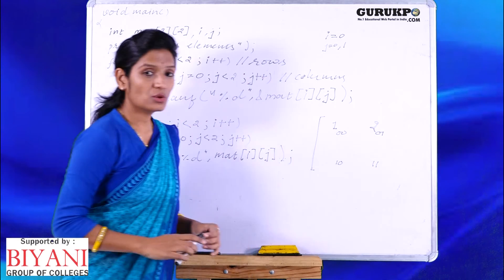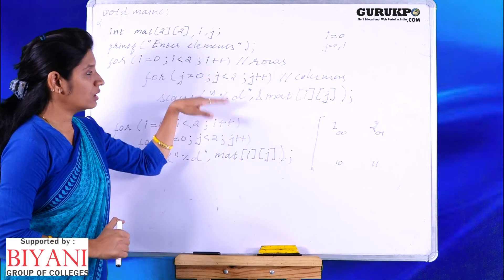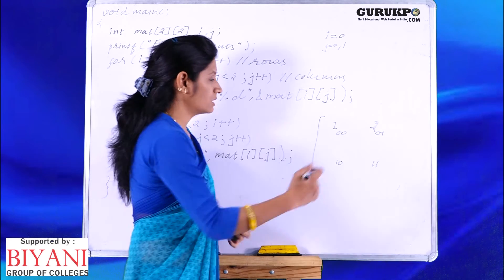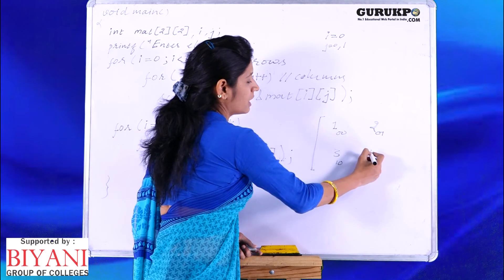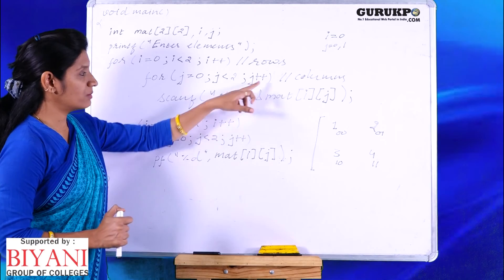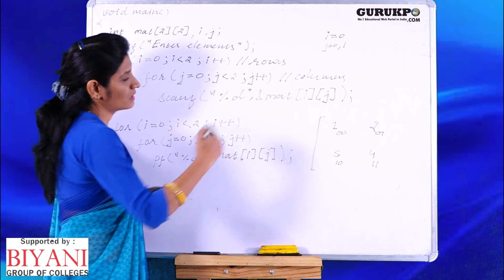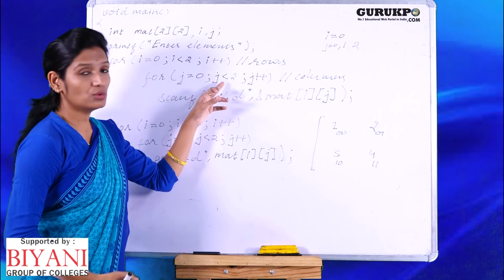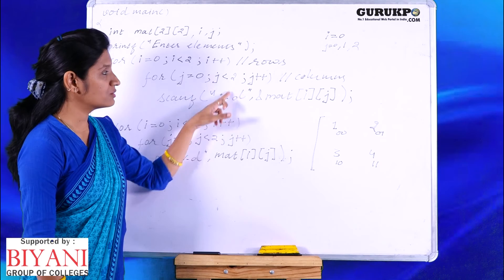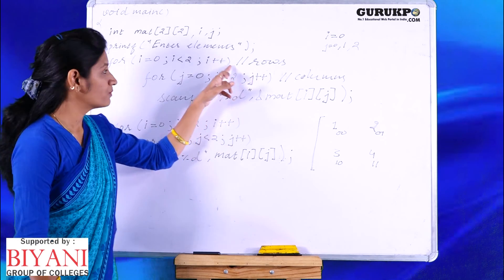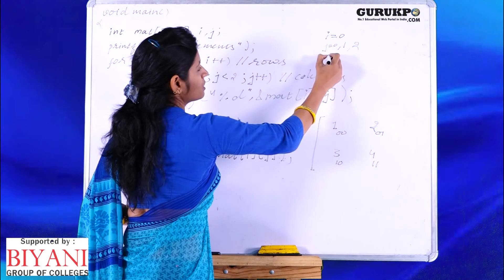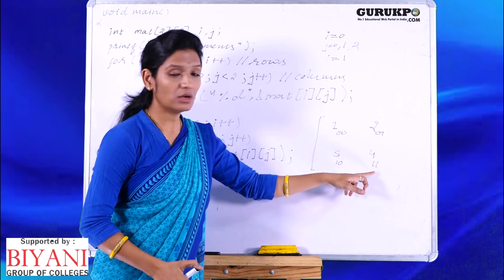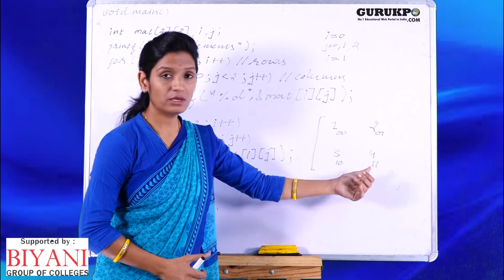And so on, this loop will be continued. Next value will go to 1,0 and next to 1,1. Suppose these are the values 3 and 4. Once this loop will be terminated, in this turn the value for j will become 2. 2 less than 2? No, this loop will be terminated, we will continue for the upper loop. Again the value of i will be incremented. The new value for i will become 1, and we will repeat the loop for first row, 1,0 and 1,1.